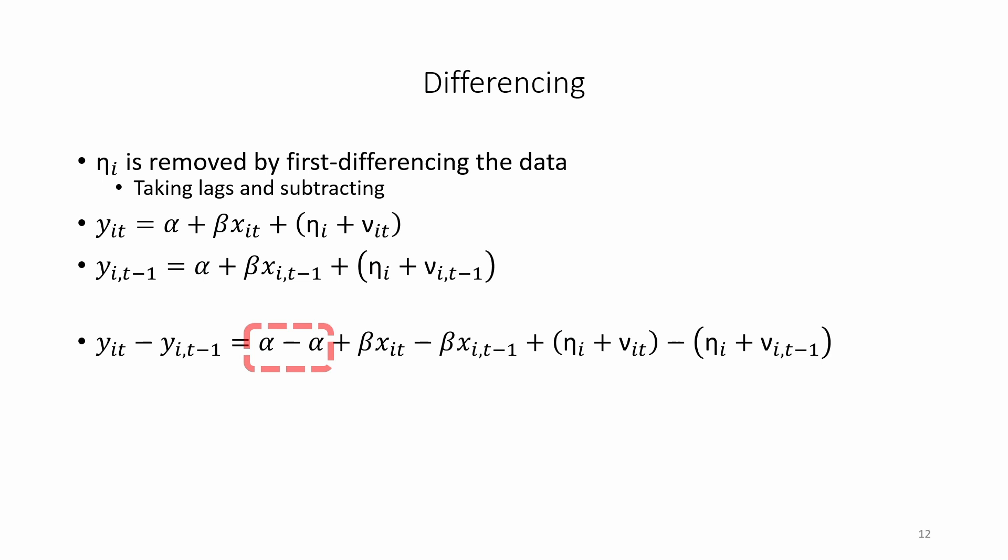The intercept terms for alpha cancel out, and the time-invariant terms eta_i cancel out because they are exactly the same from one year to the next, given that they do not change over time. This gives us a regression equation for the change in y_it, which is referred to as the first difference estimator.